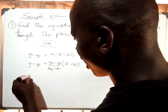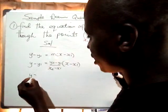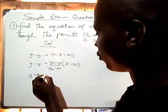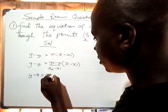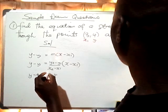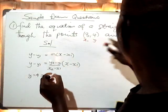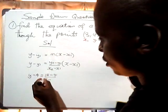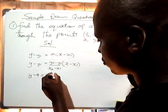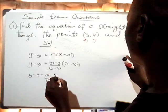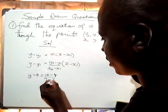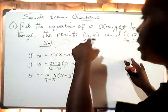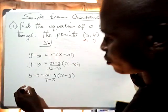We are going to have y minus y1, where y1 is 4, which is equal to y2 minus y1 over x2 minus x1 — that is 12 minus 4 over 7 minus negative 3 — then open bracket x minus x1, where x1 is 3.